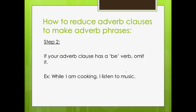So we noticed we have the same subject — delete it. Next thing we need to look at is: do I have a be verb? What I mean by that is any verb formation that has the verb 'to be' as a helping verb. Looking at our verb in the adverb clause, I have the present progressive, and that means I do have 'be + verb-ing.' So yes, I do have a be verb. Therefore, I need to omit it — get rid of it. That leaves me with 'while cooking, I listen to music,' and now 'while cooking' becomes what we call an adverb phrase.